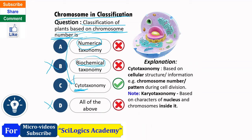The word cyto is related to cell. Looking at the explanation of cytotaxonomy, it is based on cellular structure or cellular information. So cytotaxonomy is classification based on cellular structure or information.